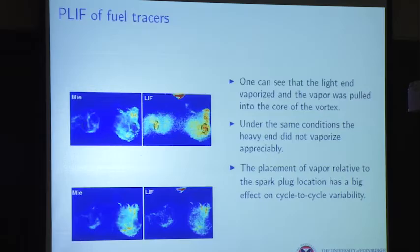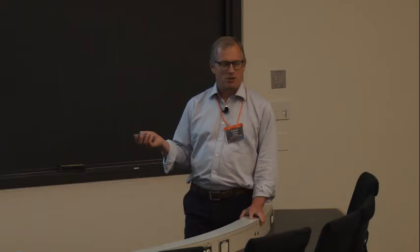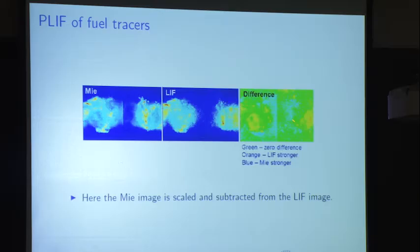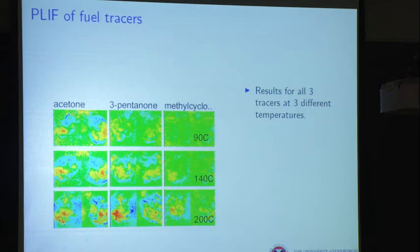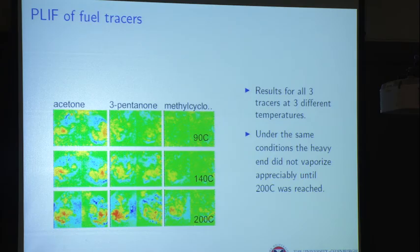They also did experiments using laser ignition to place a spark in different locations to figure out what happens. The Mie image is scaled and subtracted from the LIF image — green means zero difference between the two images, orange means LIF was stronger (vapor), and blue means droplets are stronger. Looking at the three tracers — light, medium, and heavy end — at different temperatures, even at the lowest temperature the light ends vaporize but land in the vortex. At 200°C you start to see something from the heavy end, but it's also landing in the vortex. The next topic will be lasers — let's take a 15-minute break.